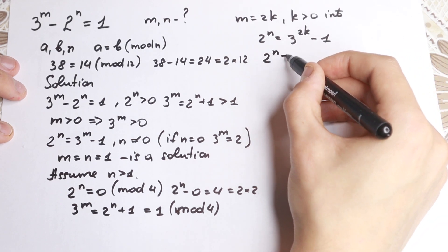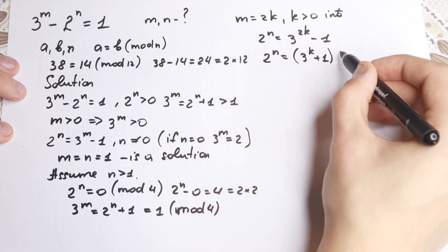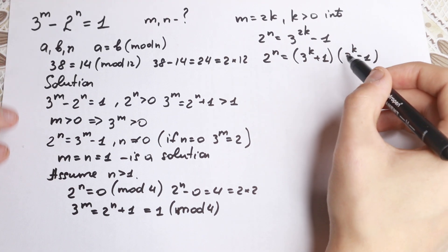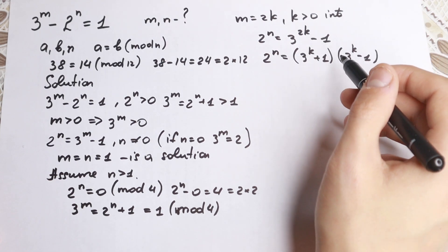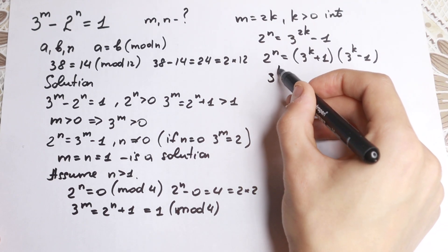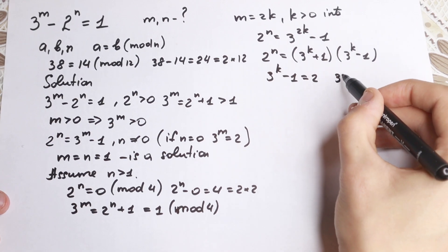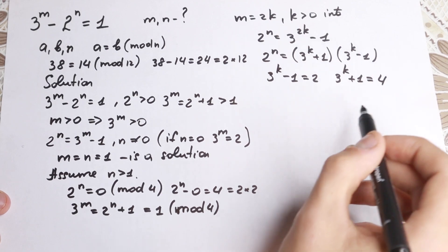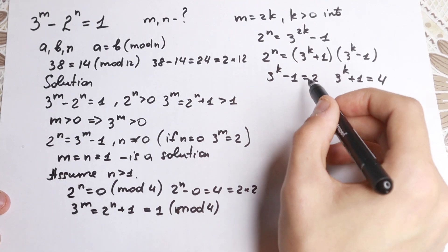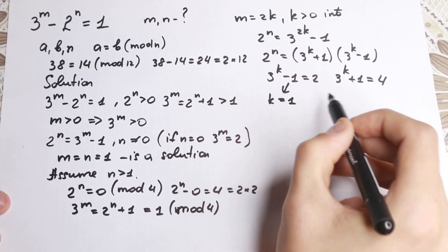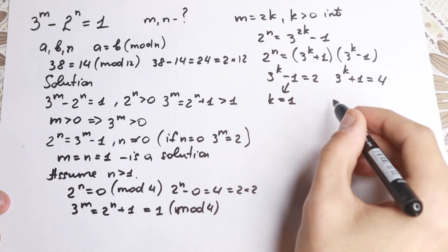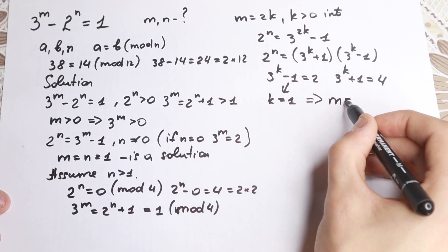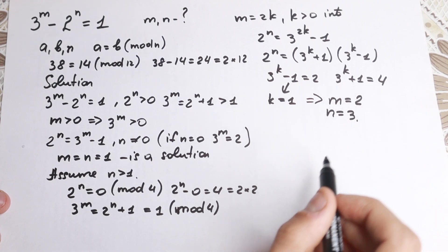So we have 2 to the n equals (3 to the k plus 1) times (3 to the k minus 1). The integers 3 to the k plus 1 and 3 to the k minus 1 are both powers of 2, and they differ by 2, so the only possibility gives us k equal to 1. Substituting k equal to 1 into m equal to 2k, we get m equal to 2 and n equal to 3. This is also a solution to this problem.